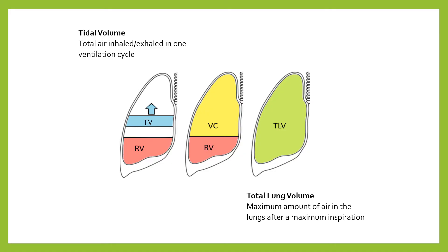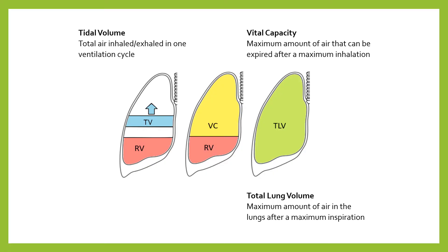Vital capacity, shown in yellow, is the volume of air expired after a maximum inhalation. Once you've filled your lungs as much as possible, you then expire as much as you can, really forcing that air back out. So total lung volume is the total amount you can get in with a maximal inspiration, and vital capacity is the volume leaving when you then breathe out maximally — pulling the intercostal muscles, pulling the rib cage down. You'll notice from the diagram that you cannot fully exhale all the air in your lungs; there's always a little left over.